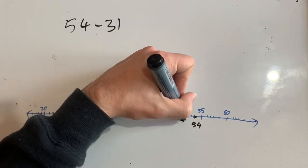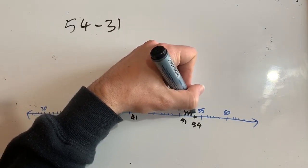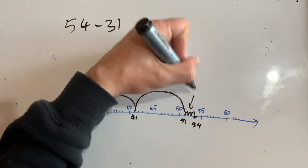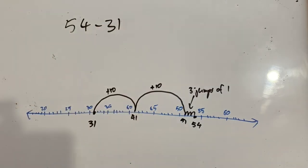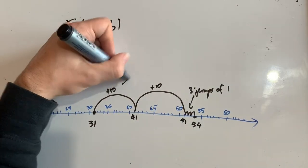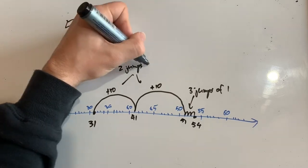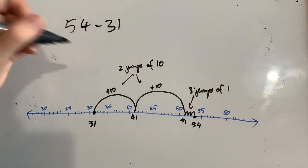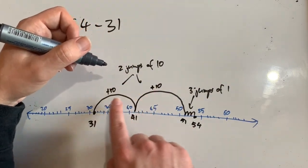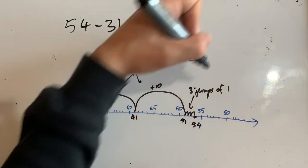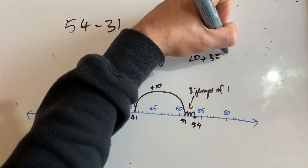I'm at 51 now, and I need to make some smaller jumps to get to 54: 52, 53, 54. That is three jumps of one. And I've got two jumps of 10, which means I need to add these two together. Two jumps of 10 is 20, plus three jumps of one is three, so 20 plus 3 is 23.